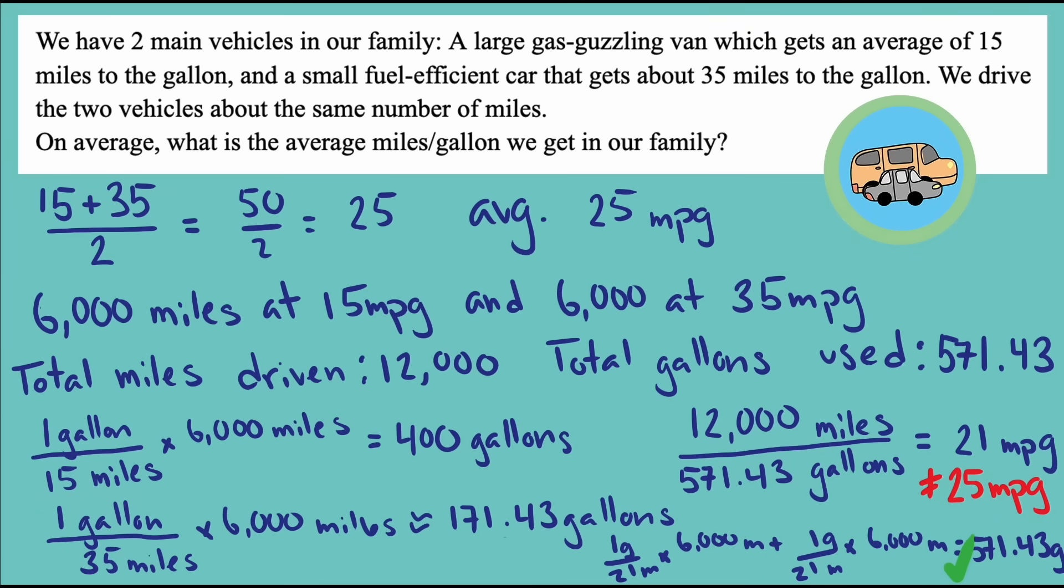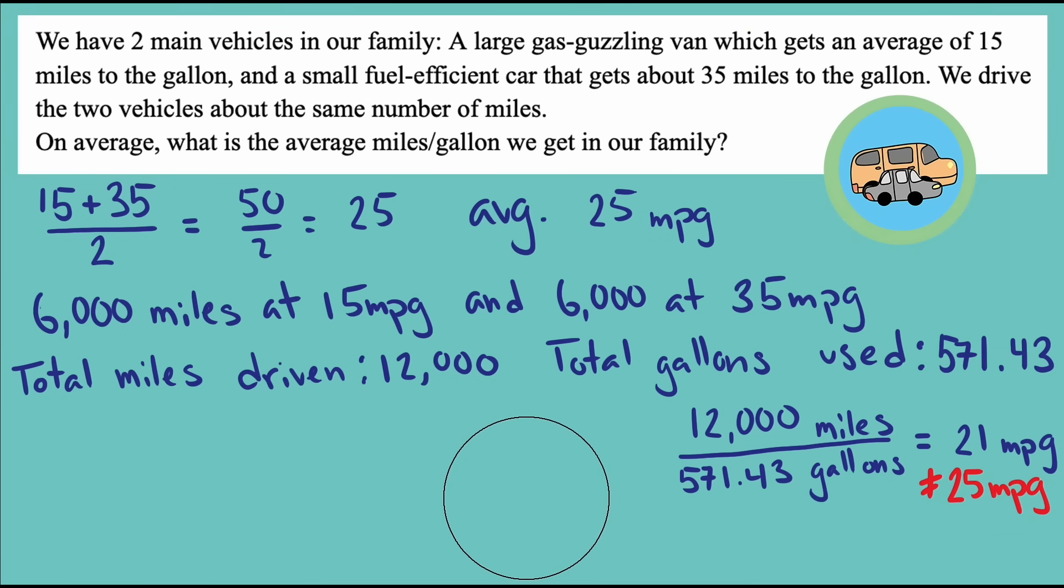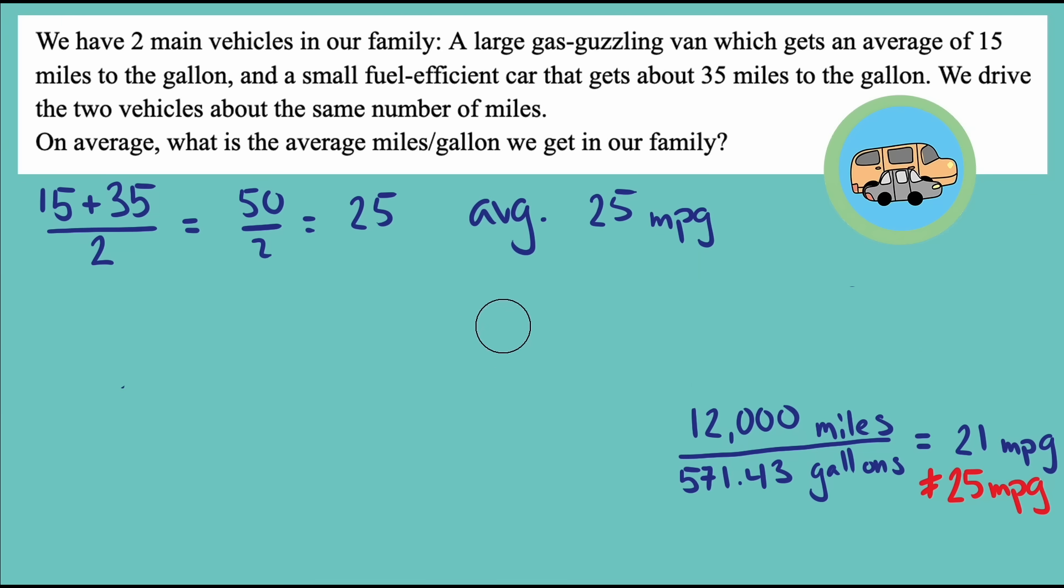What about our gas mileage problem? We didn't just add or multiply for that problem. If we take the work we did and simplify it, we see that the 6,000 miles for each vehicle cancels out. That means we could get the same mileage if we found the amount of gas used just driving 1 mile each per vehicle. Then the gas used is the reciprocal of our gas mileage.